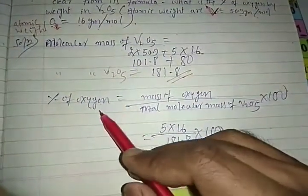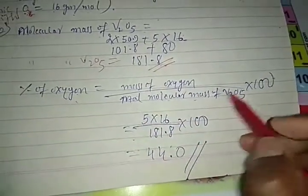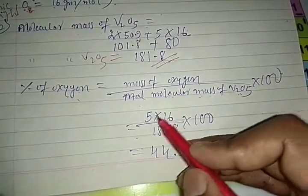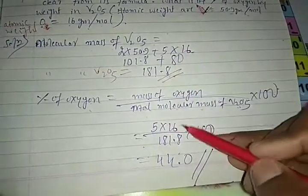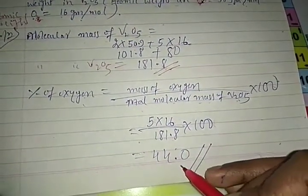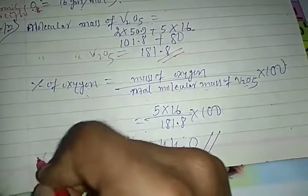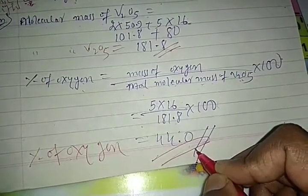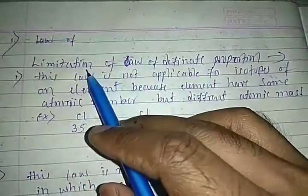Percentage of oxygen = (mass of oxygen / total molecular mass of V2O5) × 100 = (5 × 16) / 181.8 × 100 = 80/181.8 × 100 = 44.0%. So the percentage of oxygen by weight in vanadium pentoxide is 44.0%.